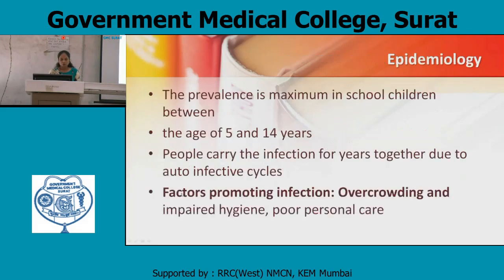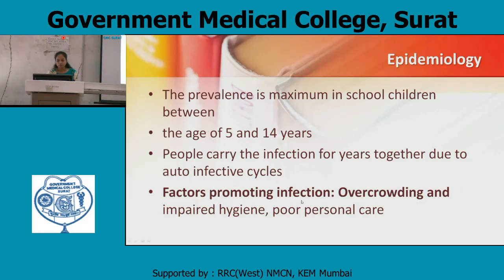Epidemiology: the prevalence is maximum in school children, age between 5 and 14 years, together due to autoinfective cycles. Factors promoting infection include overcrowding, impaired hygiene, and poor personal care.